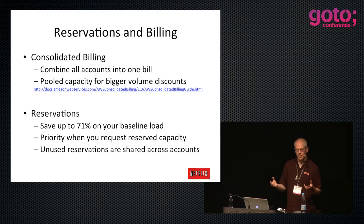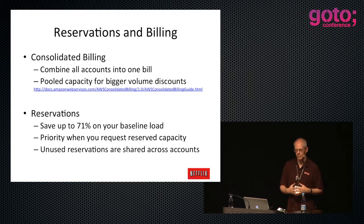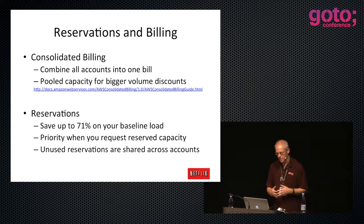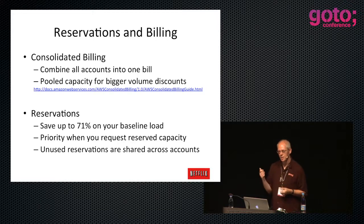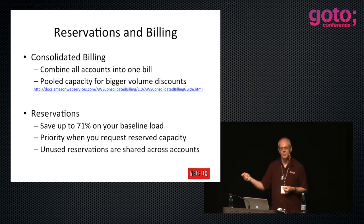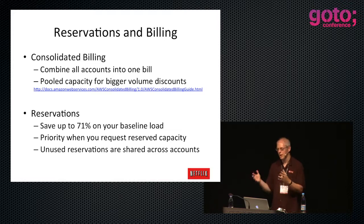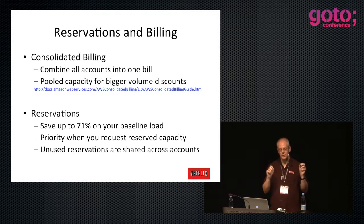There are interesting things people are still figuring out with Amazon. You can combine all your accounts into one bill and pool capacity to get bigger volume discounts. Just by using reservations, you get a 71% discount. Once you get a few million dollars of volume, there are additional discounts on top of that. Don't look at the published list price and assume that's the price at volume - you can get it down significantly.